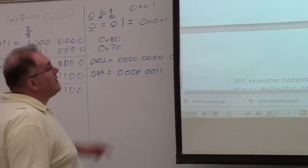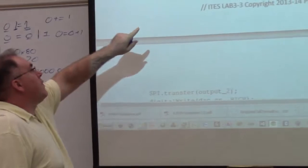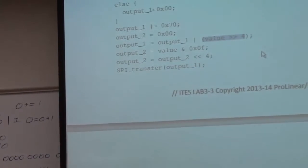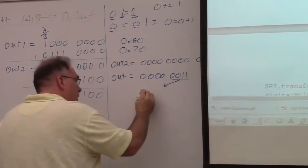And then the next line says, take the value of output 2 and shift it over 4 times and store it back into output 2. And then it's shifting to the left. So all of this stuff is going to shift to the left 4 times and you're going to get 0, 0, 1, 1.